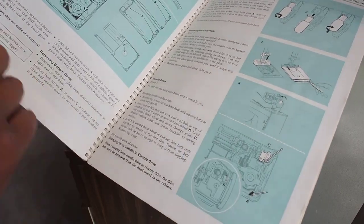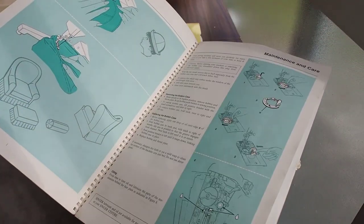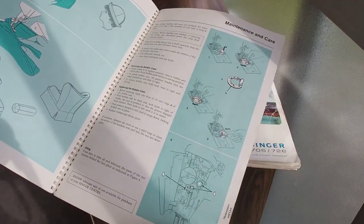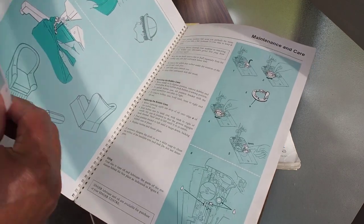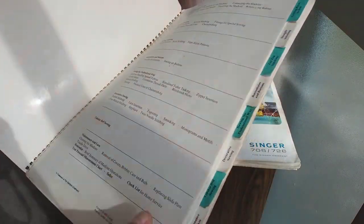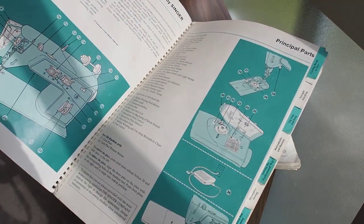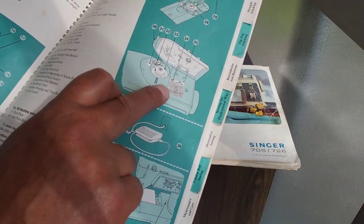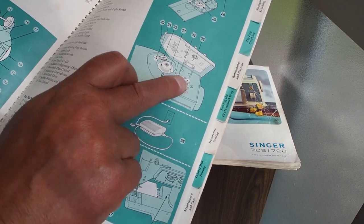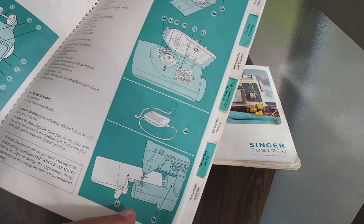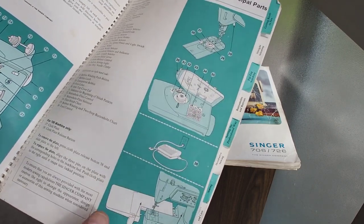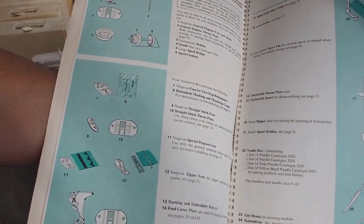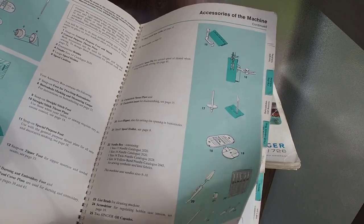The nice thing about these manuals is they clearly state not just maintenance and care, but also what accessories should come with the machine. Normally they have a little guide under the top flap there as to what stitches are available, so we should be able to glean some information from their accessories and the like.